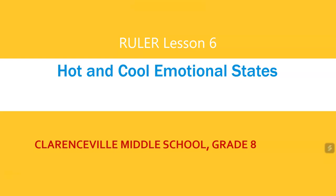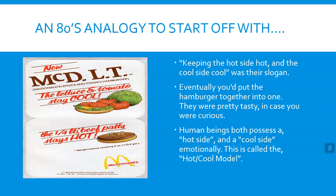For Ruler Lesson 6, we looked at hot and cool emotional states. I want to start off with an analogy from another time — a time called the 1980s. I know you weren't around in the 1980s; I'm an old guy. McDonald's sold a hamburger called the McDLT, and their slogan was 'keeping the hot side hot and the cool side cool.' It was actually a good idea.